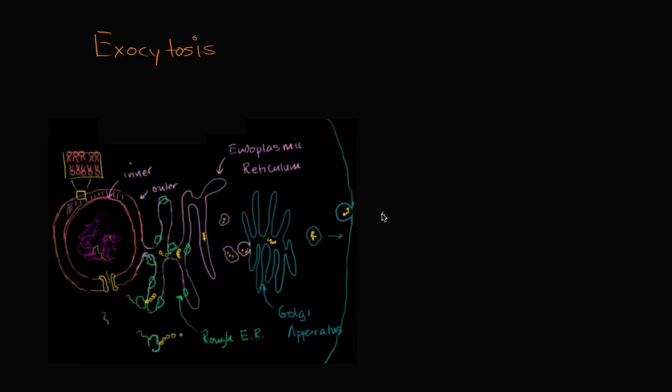And this is classic exocytosis. There are other cases where maybe it merges partially, releases the contents, and then buds back. It's called the kiss and run method of exocytosis, but the classic one is it merges with the membrane.